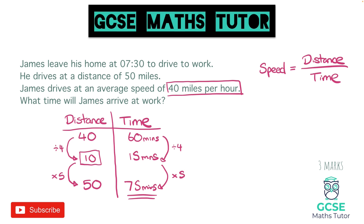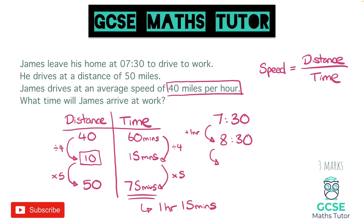That's how long it's going to take James to do the 50 miles. This question wants us to calculate the actual arrival time. 75 minutes is 1 hour and — from 60 to 75 — an additional 15 minutes, so that is 1 hour and 15 minutes. We start this drive at 7:30. Adding 1 hour gets us to 8:30, then adding 15 minutes gets us to 8:45. That is the final answer: 8:45.